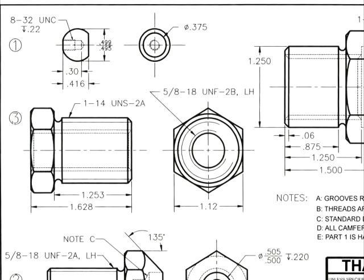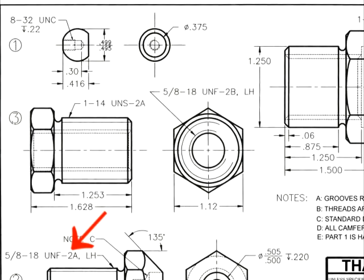There's also another specific tolerance: the 2 in 2B, or 2A — the class of fit for the threads to cut. That is another way of expressing a specific tolerance.